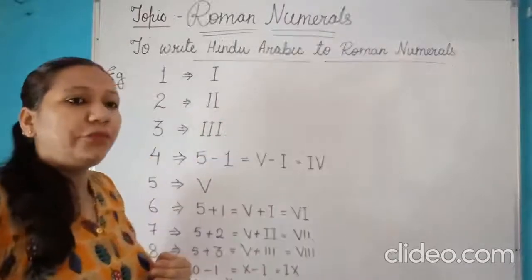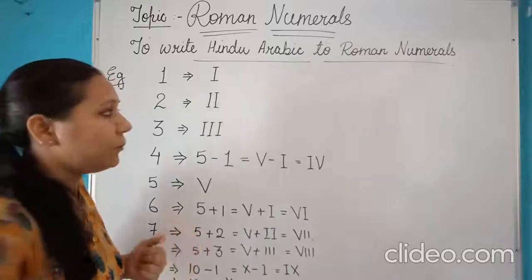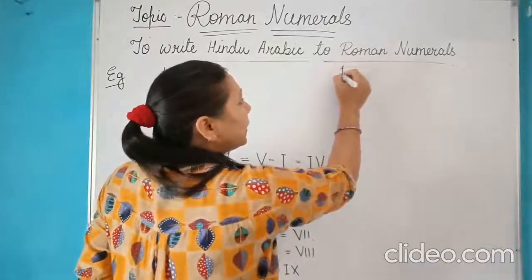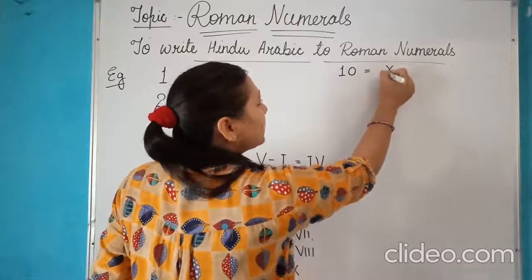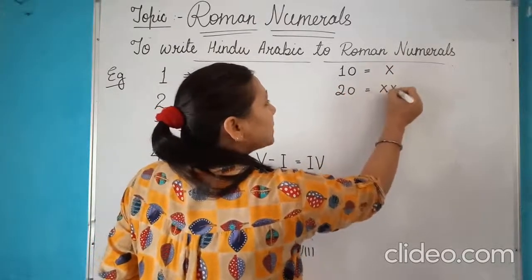In the similar way, you can write any larger value also in the same format. For example, for writing 10, the symbol is X. For writing 20, it is XX.